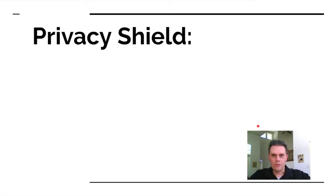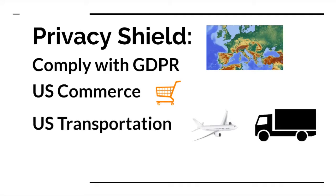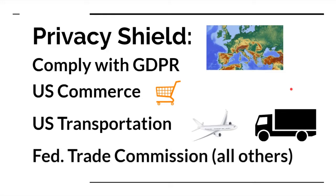The next concept in trans-border issues is the Privacy Shield, which is basically a US program that helps companies comply with the GDPR. You apply through the Department of Commerce, which provides oversight. For shipping or airline companies it's the US Department of Transportation that regulates, and the Federal Trade Commission regulates all others.